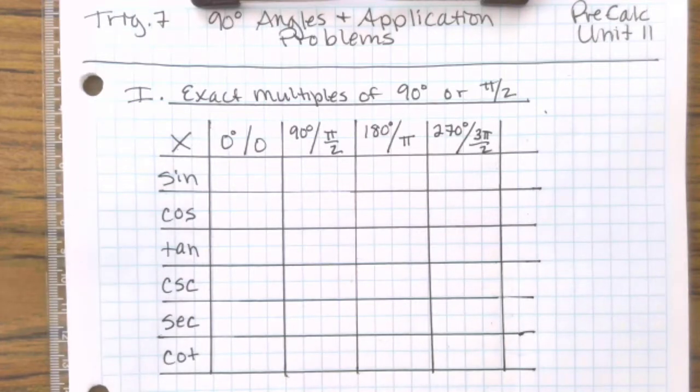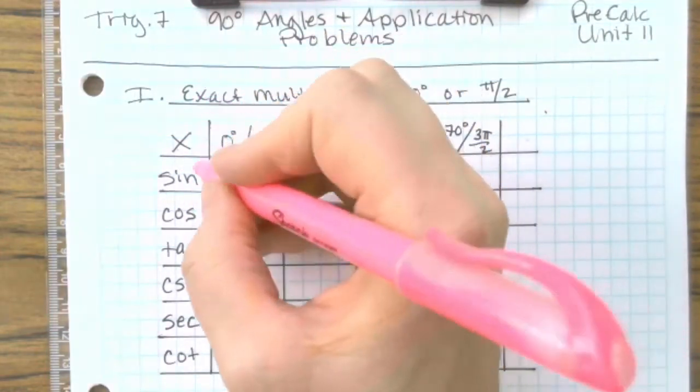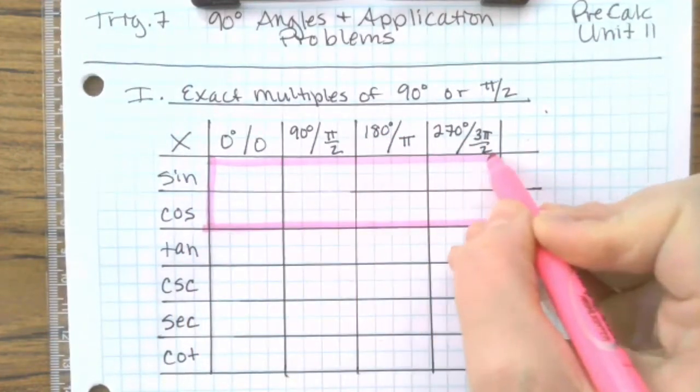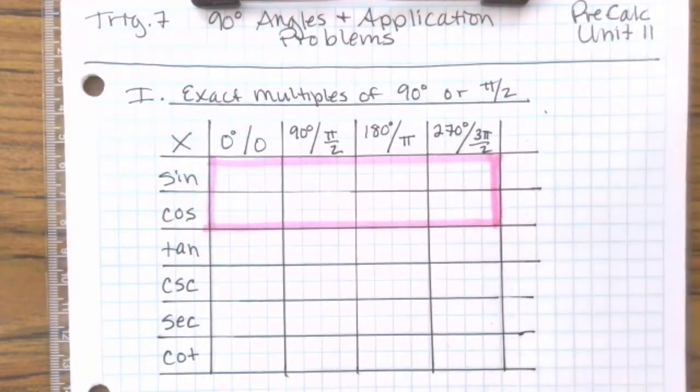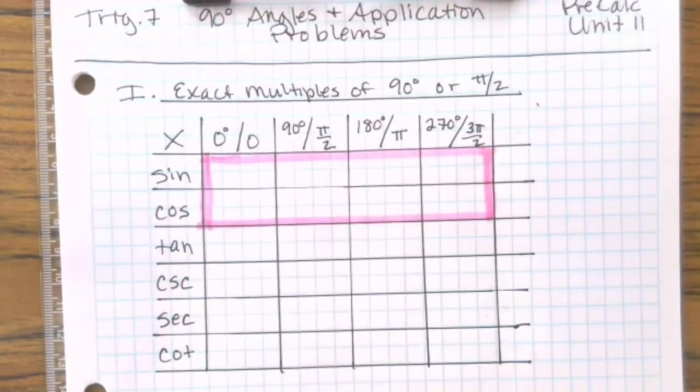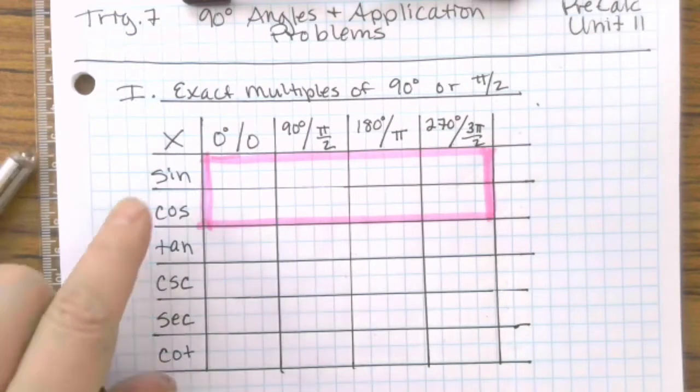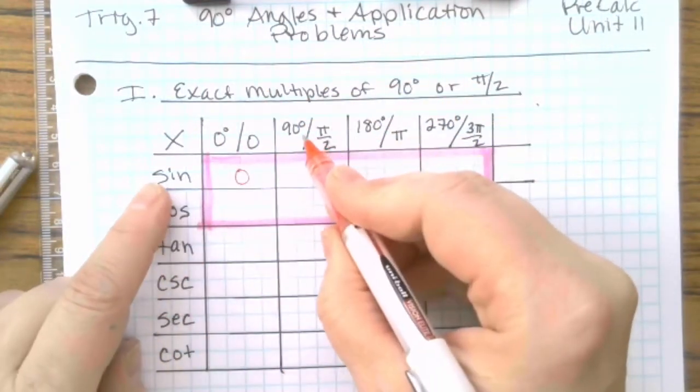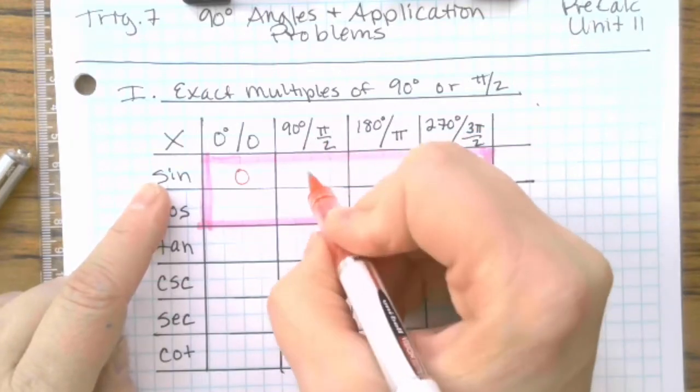There is a trick to memorizing these that makes it a little bit simpler. If you can just memorize sine and cosine, from those values you can pretty much figure out the rest of them in a pretty short amount of time. So sine of 0 degrees or 0 radians is 0. Sine of 90 degrees or π/2 radians is 1.